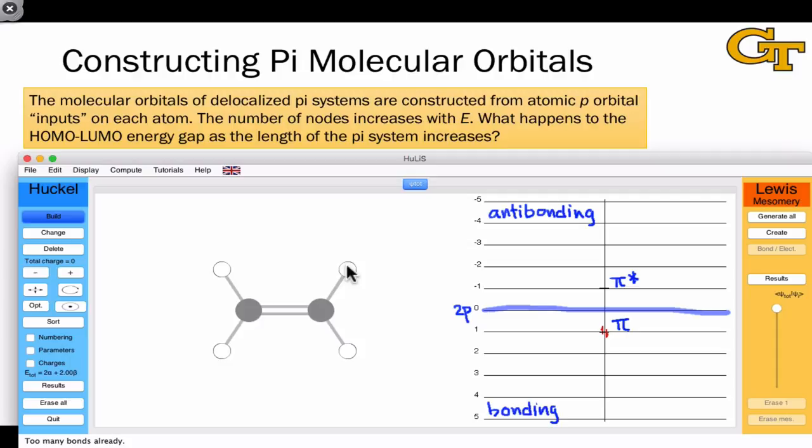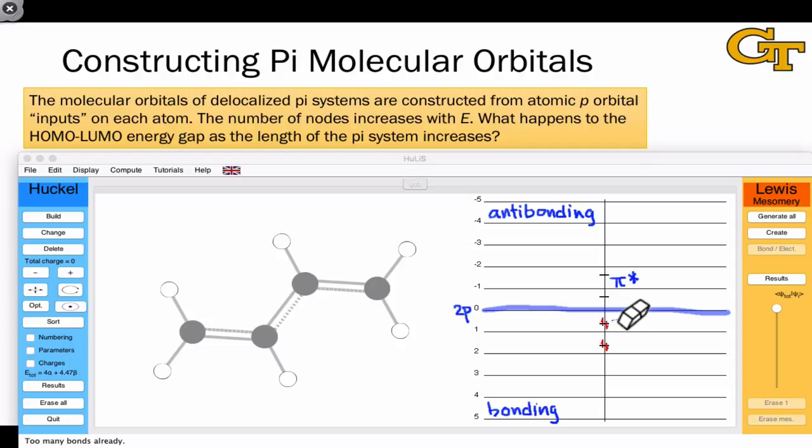What happens when I add two more atoms to this conjugated pi system to generate butadiene? Let's optimize the structure, and center it, and observe what's happened on the orbital energy diagram. We've gone from two pi molecular orbitals to four, and now rather than using the pi and pi star labels, it's a little bit more appropriate to start indexing the pi orbitals since we have more than two. Pi one and pi two are both bonding, while pi three and pi four are both anti-bonding.